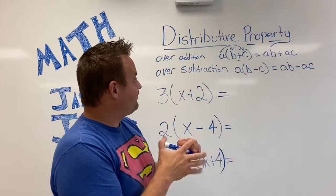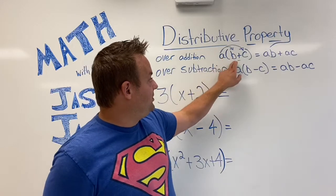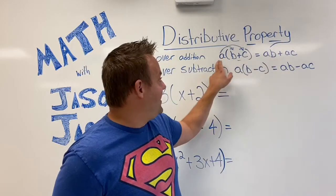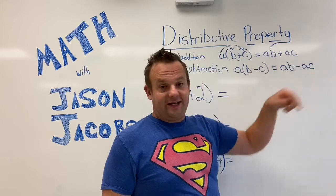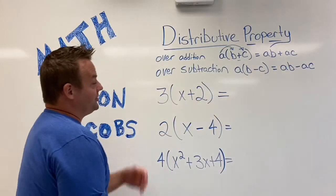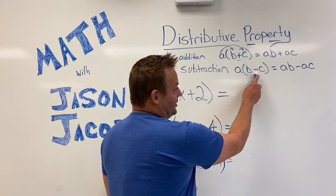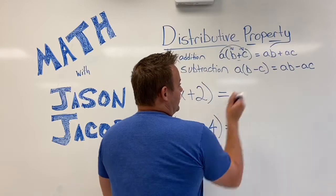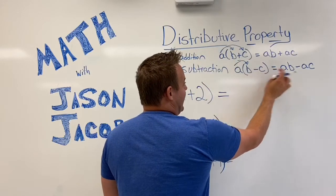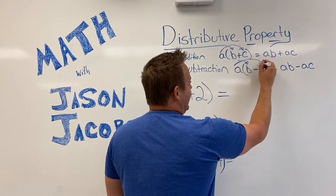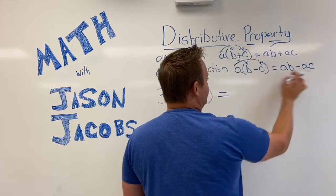So basically, the A distributes to the B, and the A distributes to the C. A times B plus A times C, just like that. Now the distributive property over subtraction will have a subtraction sign right here. So you go A times B minus A times C.